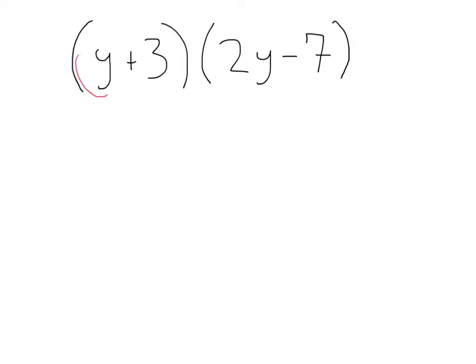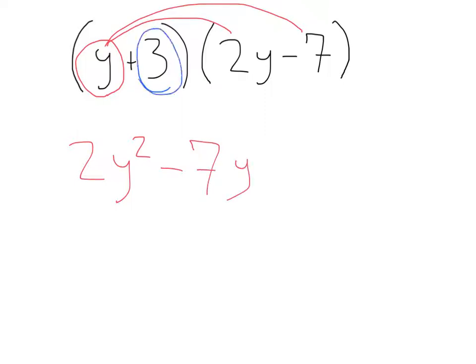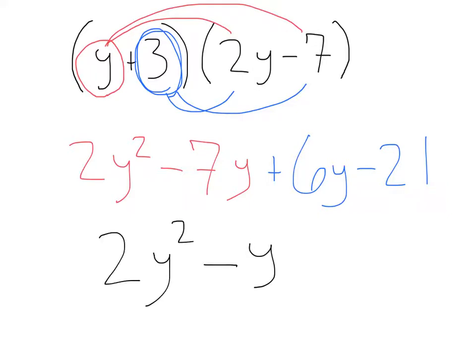If I take this y to start, I'll distribute that out to the 2y, that'll give me 2y squared, and then distribute it out to the negative 7, which would be negative 7y. Next, let's take our next term, a positive 3, distribute that to 2y, that'll be plus 6y, and then distribute it to the negative 7, which would be minus 21. Combining our like terms, negative 7y plus 6y, that'll give us negative y. So we get 2y squared minus y minus 21.